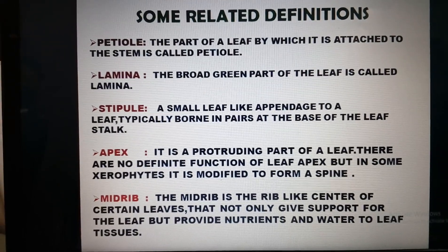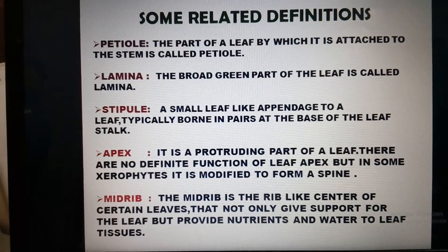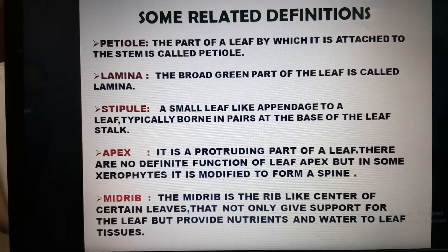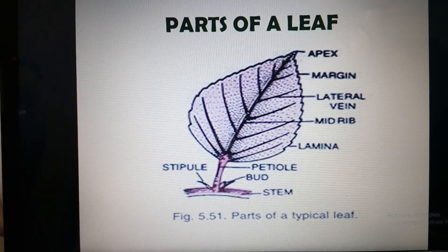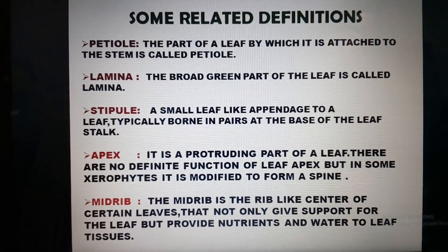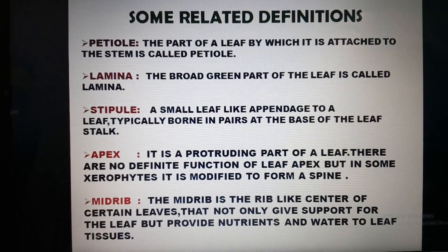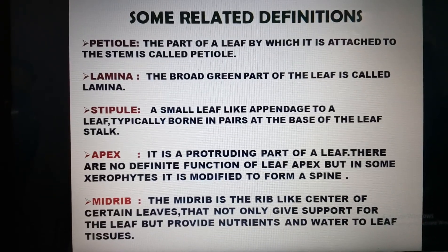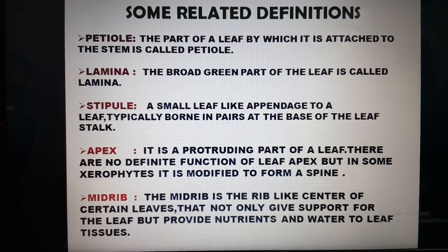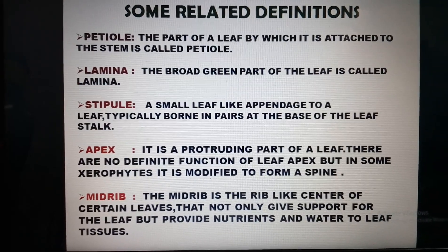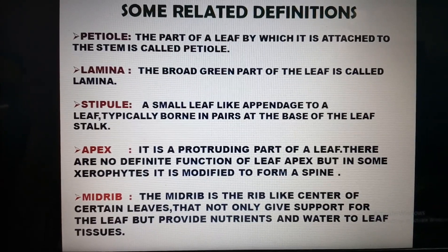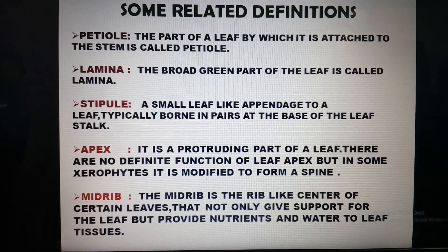born in pairs at the base of the leaf stalk. The next one is the apex. Apex is a protruding part of the leaf. There are no definite functions of the leaf apex, but in some xerophytes it is modified to form a spine. Xerophytes means plants which are grown in deserts, and the majority of desert plants have a spine, which in some cases is a modification of their apex.